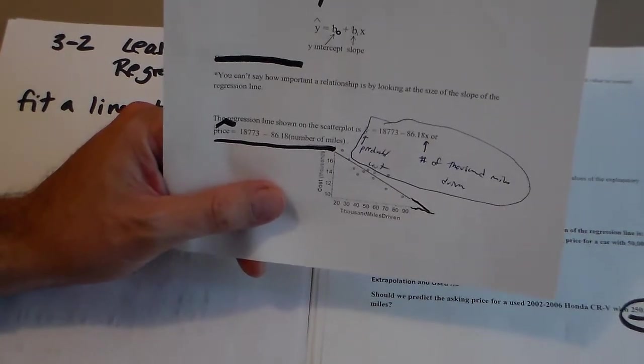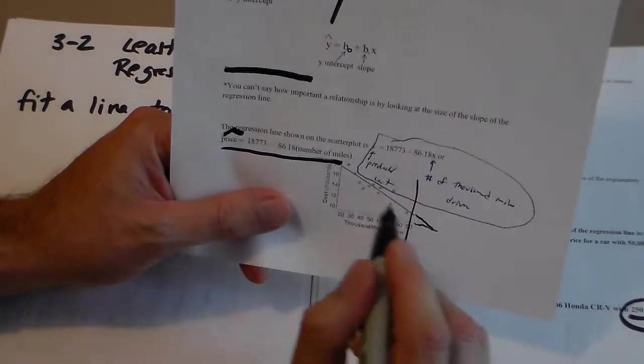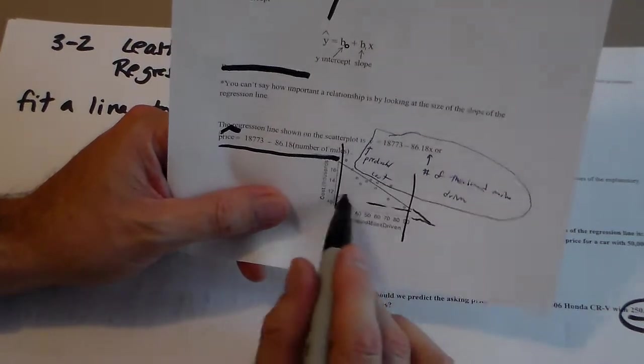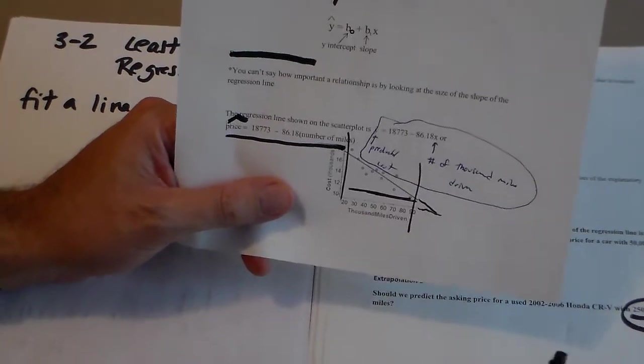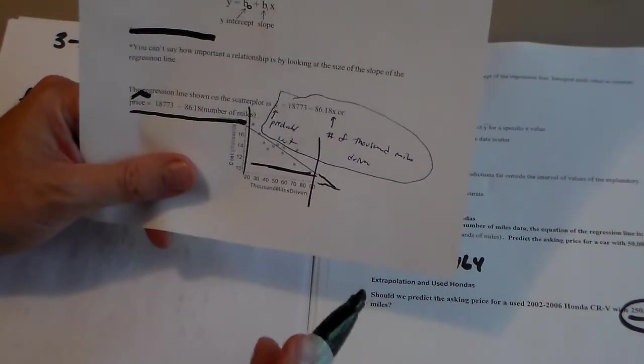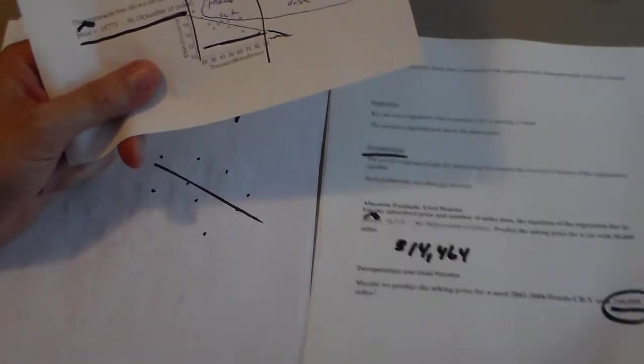You can bring it someplace and salvage it. So know that you have a certain window of values that you can use for X. And when you go outside that window of values, it's an example of extrapolation.